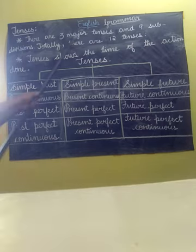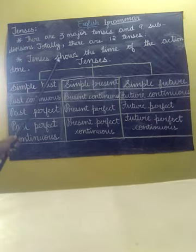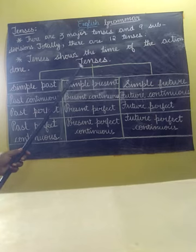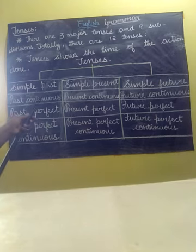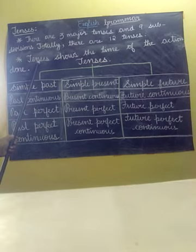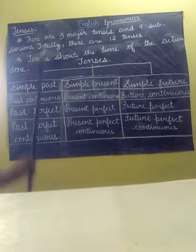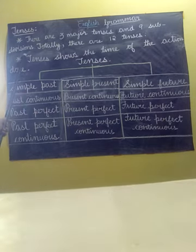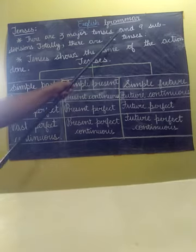Now see here there are three major tenses and nine subdivisions. So when you ask in class, most of the children understand that we have only three tenses. Yes of course we have three tenses only, but they are major. After that you have so many subdivisions. So nine subdivisions are there under the three. Under the three, after the three, you have three for each and that makes twelve tenses. So there are three major tenses and nine subdivisions. Totally there are twelve tenses.